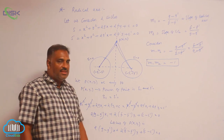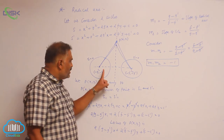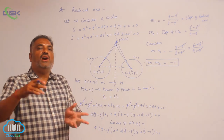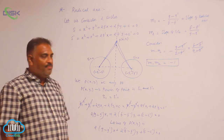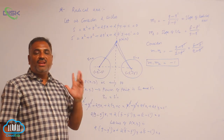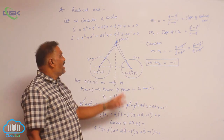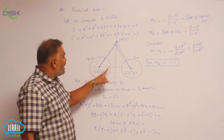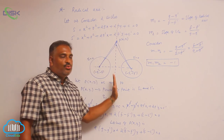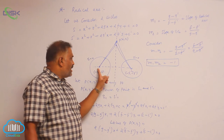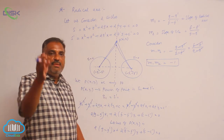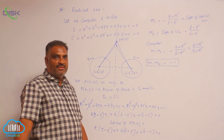Further, we observe that when two circles are non-intersecting — that is, one circle is completely outside the other — the radical axis lies in between the two circles.